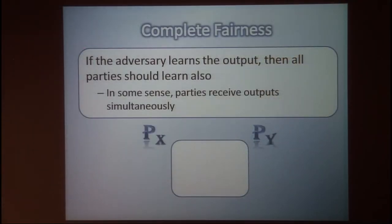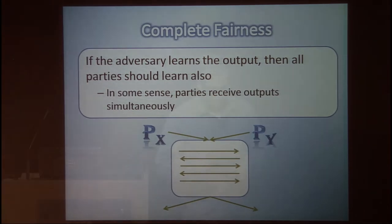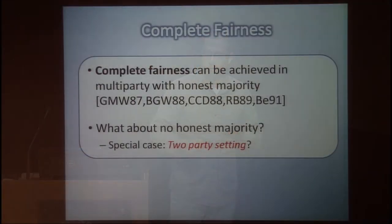Fairness essentially means that if one party learns the output, then all parties should learn the output. We want to prevent the case where one party learns the output without the other parties. In some sense, the parties interact and then learn the output simultaneously at the same time. This is something very strong that we want to achieve — complete fairness. We know that fairness can be achieved when we have an honest majority in the multi-party case.